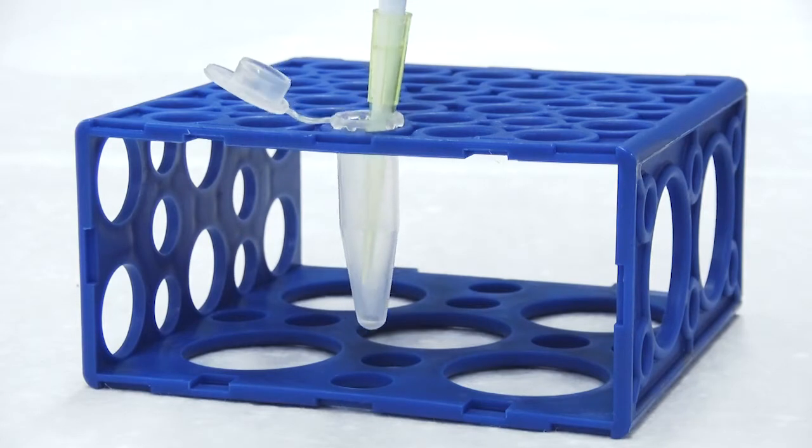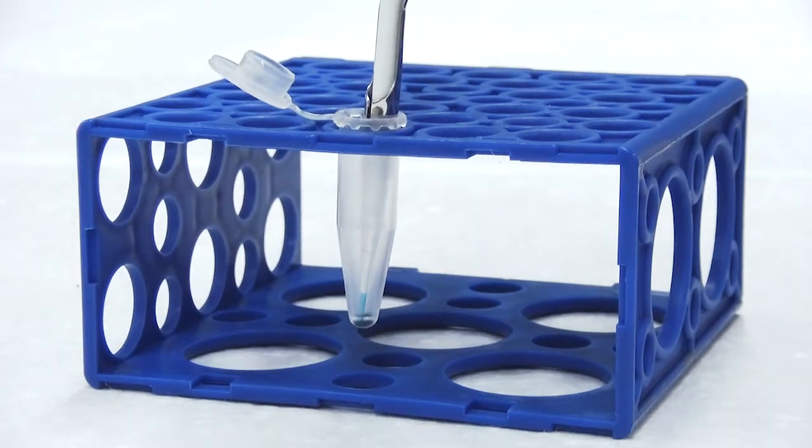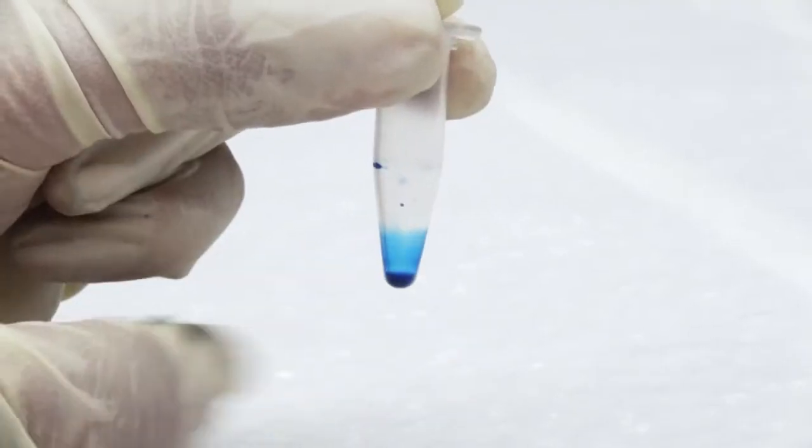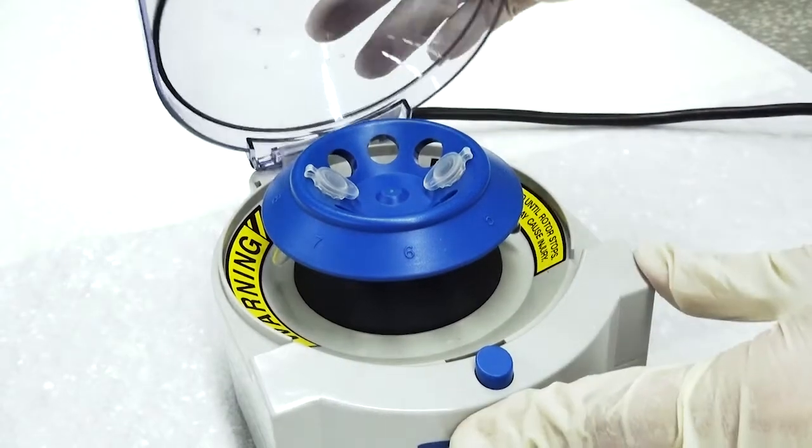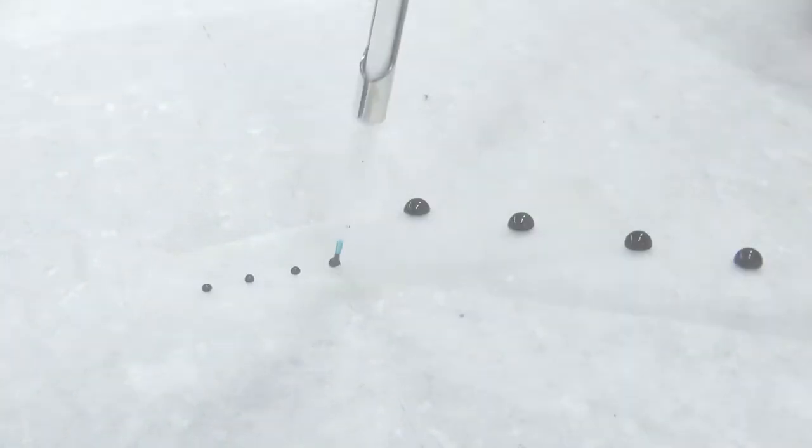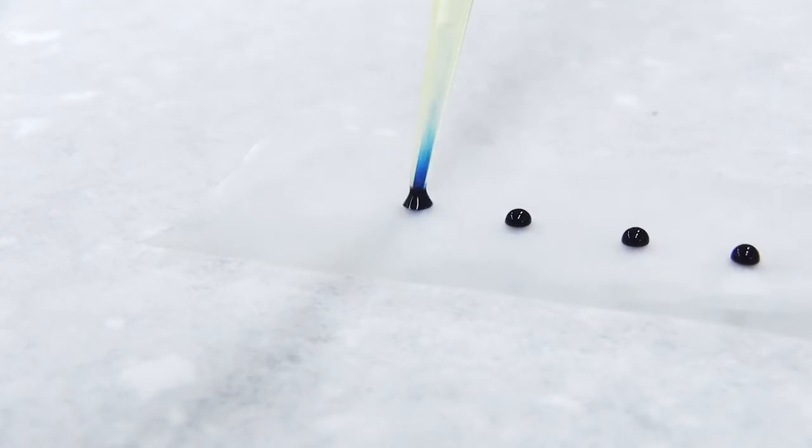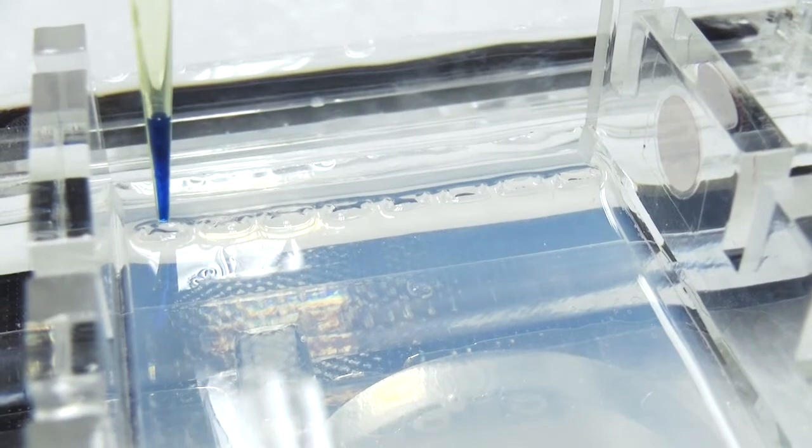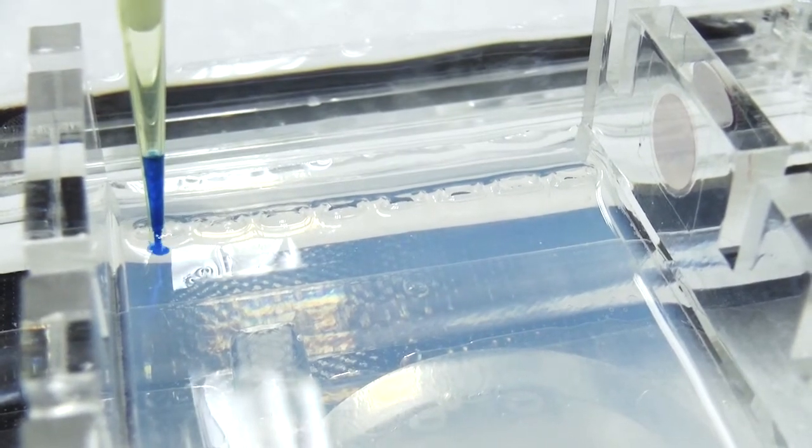Mix loading buffer into the nucleic acid sample tube and centrifuge before loading. Or, mix loading buffer with the nucleic acid sample on parafilm before loading. Load the samples into the wells. Be careful not to poke the gel.